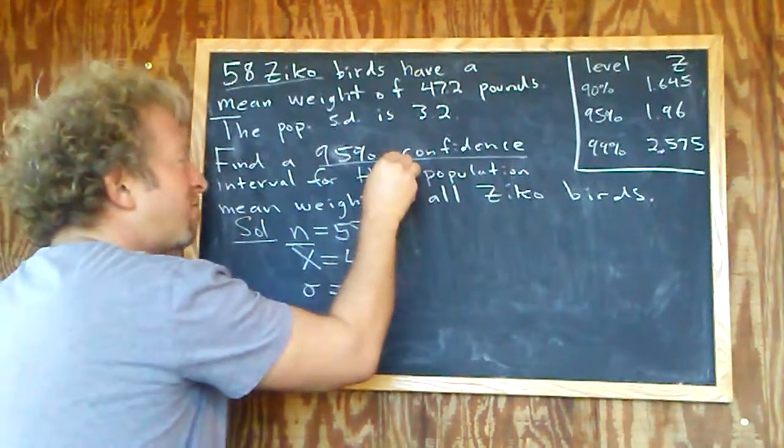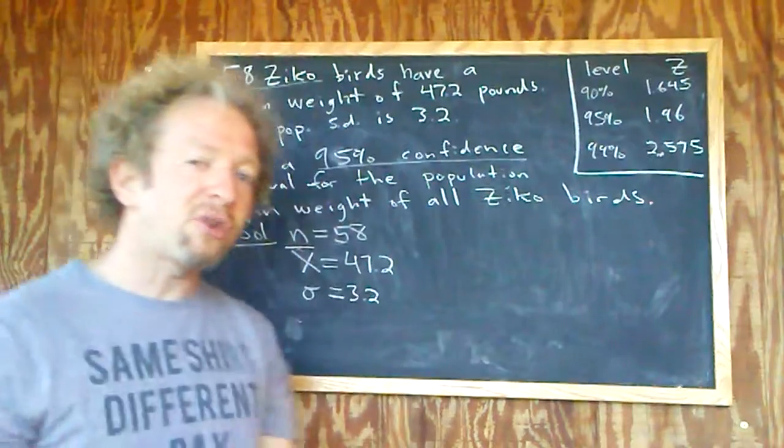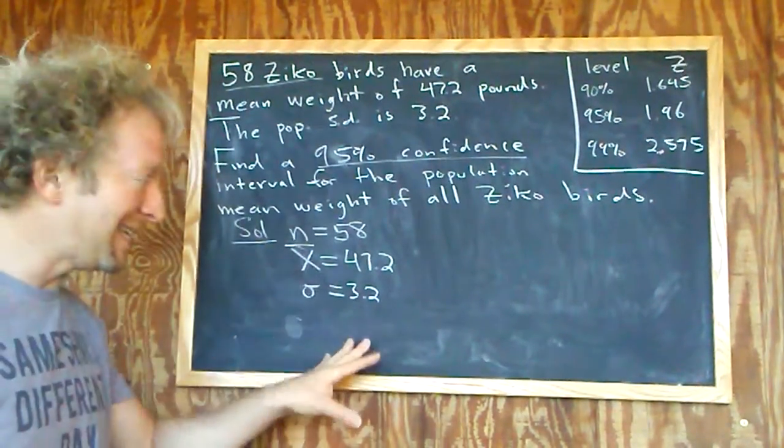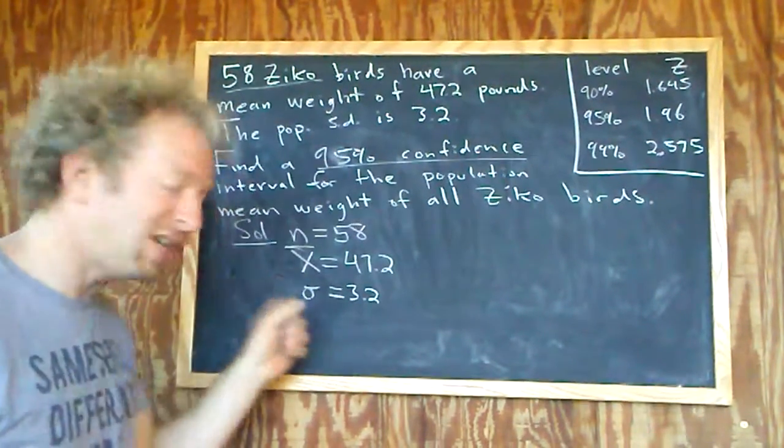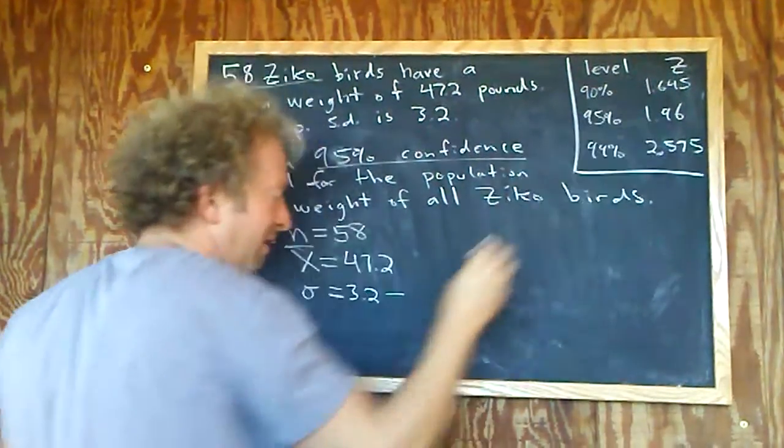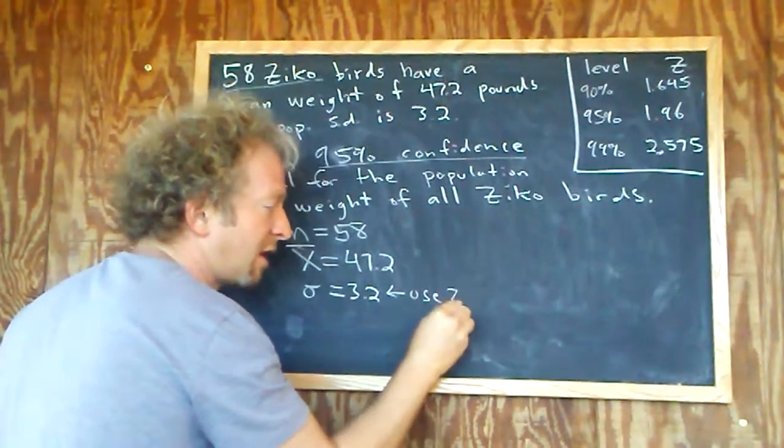We want a 95% confidence interval for the mean. Whenever you're trying to find a confidence interval for the mean, you're either going to use z or t. If you have the population standard deviation we're going to use z. Otherwise you have to use t, so we're going to use z.